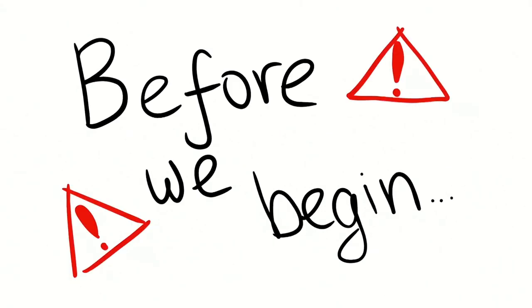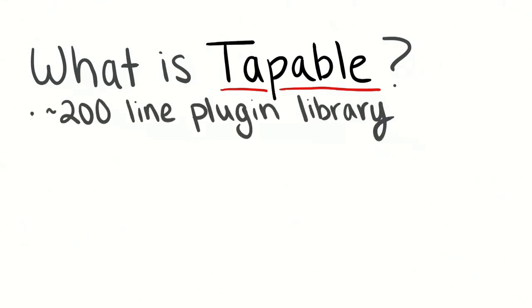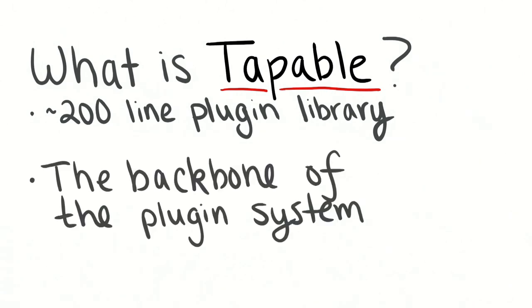But before we begin, there is something I want to talk about, which is our plugin system. Has anybody ever even heard of the word tappable before? I guess before I even start, who uses Webpack? Keep your hands up if the next thing applies. Who understands how it works? Well, every hand will be up by the time we're done with this talk. So, tappable is a 200-line library. It's grown a little bit since 200. But it is the backbone of our Webpack plugin system.